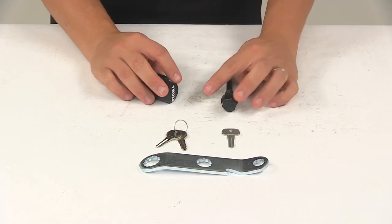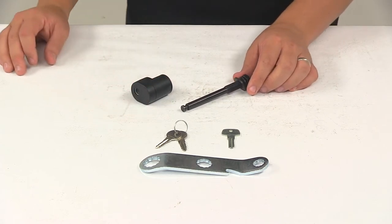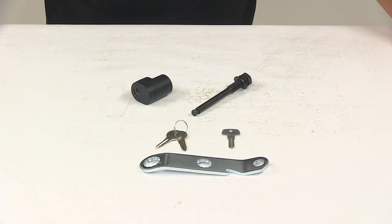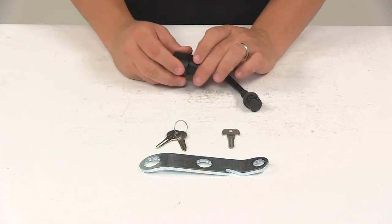The unit also features Thule OneKey system compatibility, so it can be keyed alike with other Thule OneKey system locks. Keyed alike locking cylinders are available in packs of two, four, six, eight, and ten, all sold separately at eTrailer.com.